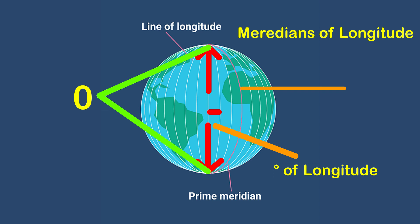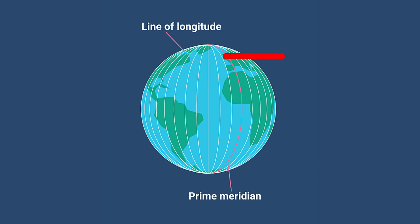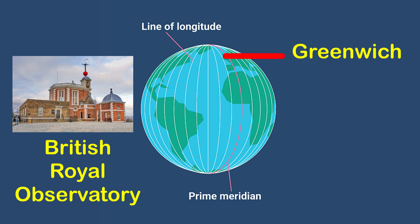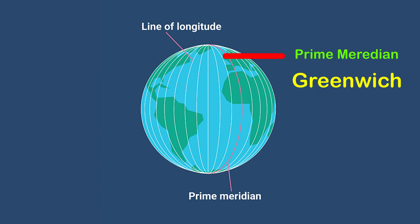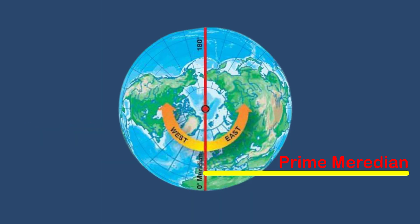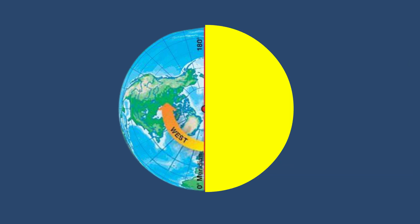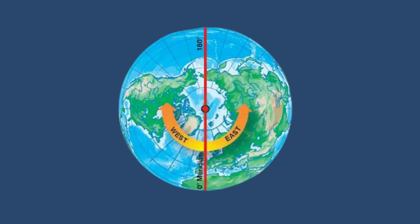Unlike parallels of latitude, all meridians are of equal length. It was difficult to number the meridians, so all countries decided that the count should begin from the meridian which passed through Greenwich, where the British Royal Observatory is located. This meridian is called the Prime Meridian; its value is zero degree longitude. From it we count 180 degrees eastward as well as 180 degrees westward. The Prime Meridian and the 180 degree meridian divide the earth into two equal halves: the Eastern Hemisphere and the Western Hemisphere. The longitude of a place is followed by the letter E for east and W for west.